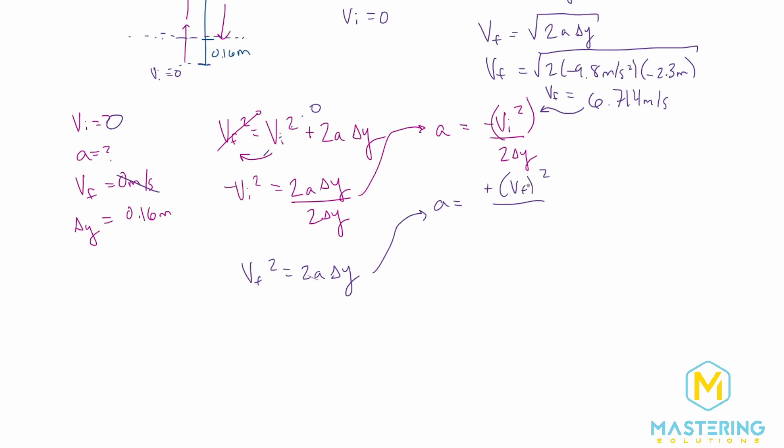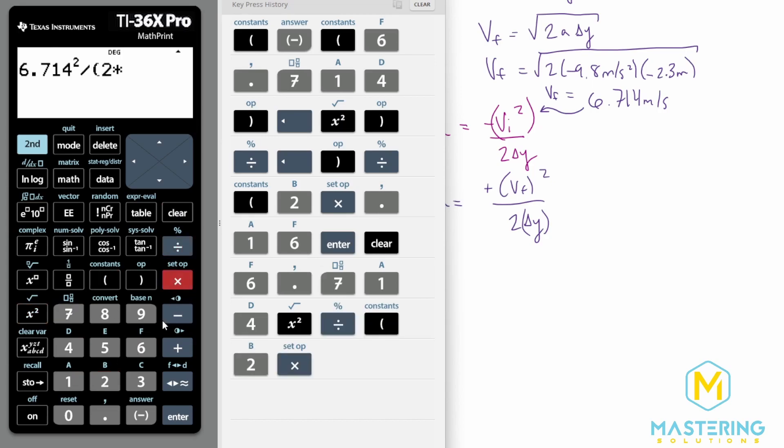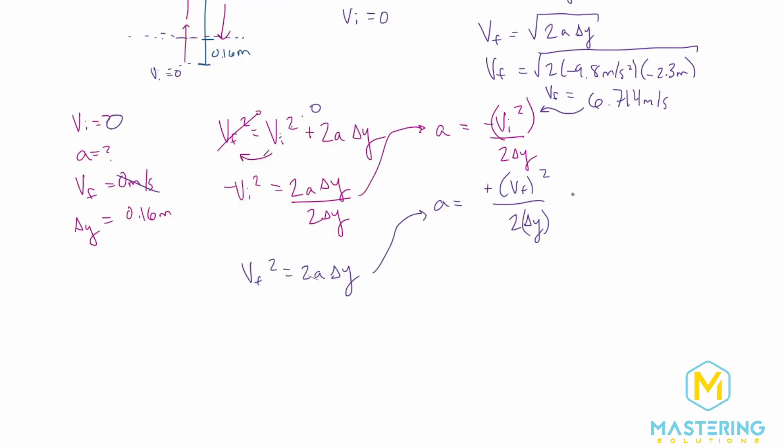So we have acceleration is v final squared over 2 delta y. When we plug that in, we have 6.714 squared divided by 2 times the delta y of 0.16, which gives us 140.8. We'll go to two significant figures, so we'll round that to 140 meters per second squared. They tell us they want it in meters per second squared and in g's.